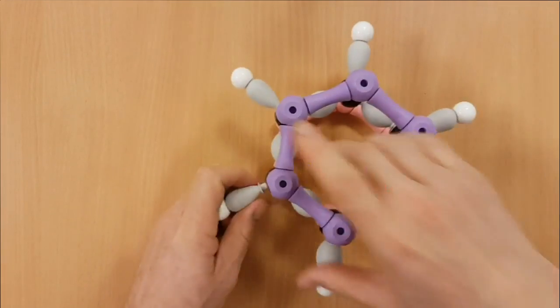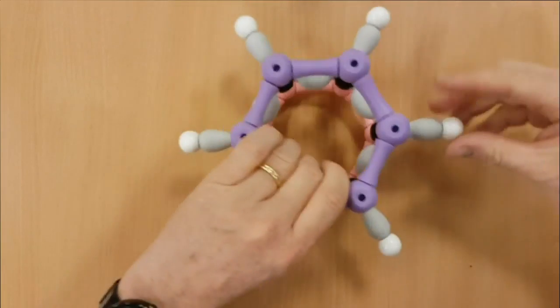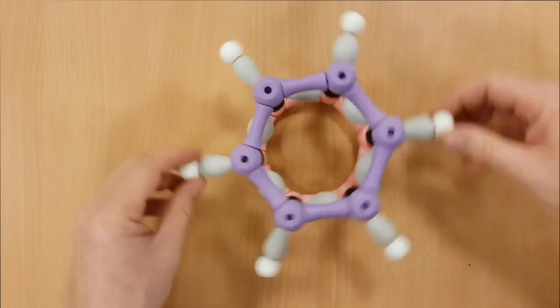So this is a benzene ring. It's got six black carbons in a hexagon and six white hydrogens coming out of it.